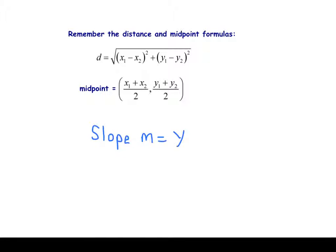Slope is y2 minus y1 over x2 minus x1. We call that the change in y over the change in x.